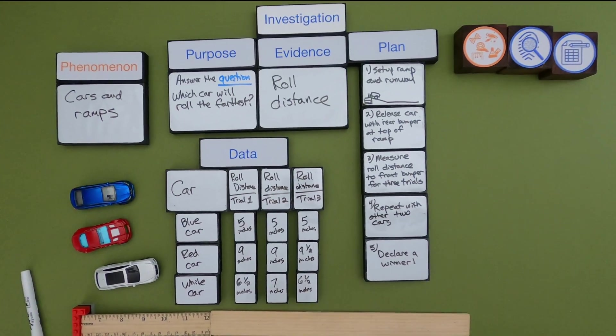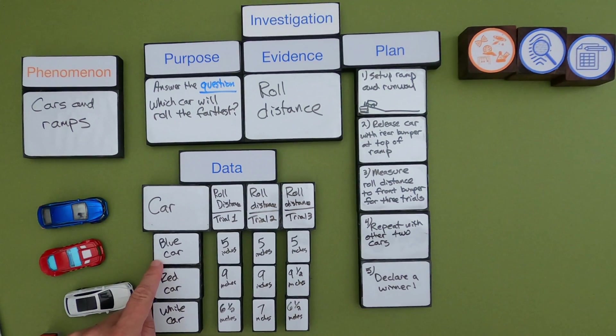Okay now we can look at the data. So what I found is that the blue car in each of the trials went five inches. The red car went nine, nine, and nine and a half inches. And then the white car went six and a half twice and seven inches once.